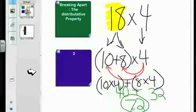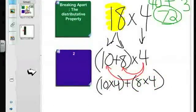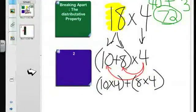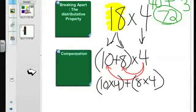So 72 ends up being our product for this problem. 72 ends up being the product of the factors 18 times 4. Now that's one way to do this. But what we're going to do today is we're going to look at how to do this a second way, otherwise known as using compensation.